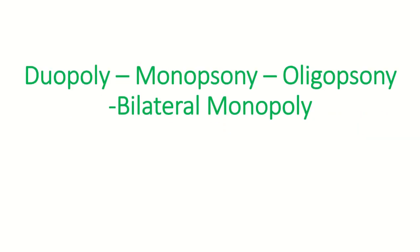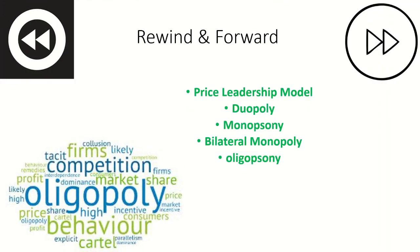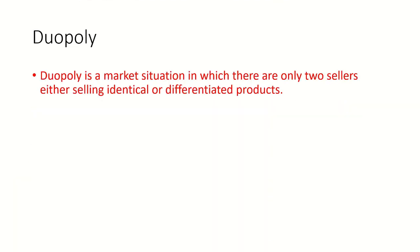Today we are going to discuss four topics: duopoly, monopsony, oligopsony, and bilateral monopoly. We will discuss them one by one. The first one is duopoly — duopoly means it is a market situation in which there are only two sellers.